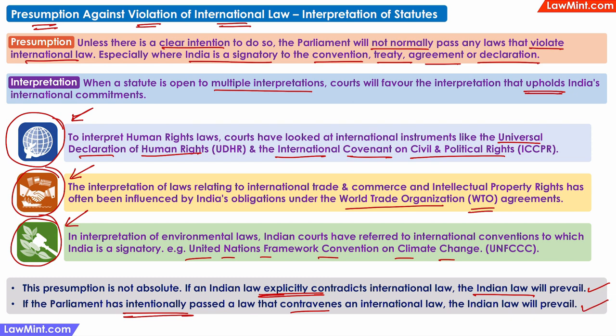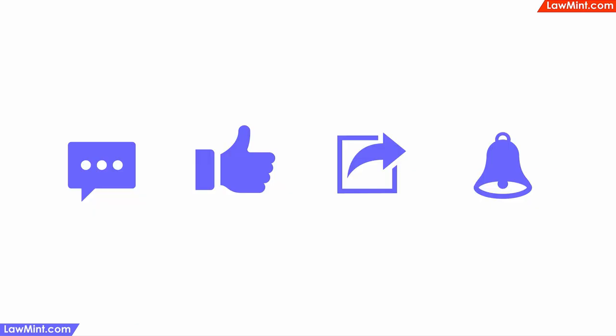For example, if there is a pandemic and India urgently needs to produce vaccines that are patented by foreign companies, Parliament can pass a law allowing Indian companies to manufacture such vaccines, even if this leads to violation of international intellectual property agreements that India is a part of. Of course, such intentional violations of international law occur only in extremely rare situations. With that, we will end this video. If you have any questions or feedback, post a comment below. I will see you soon in the next video. Take care and Jai Hind.